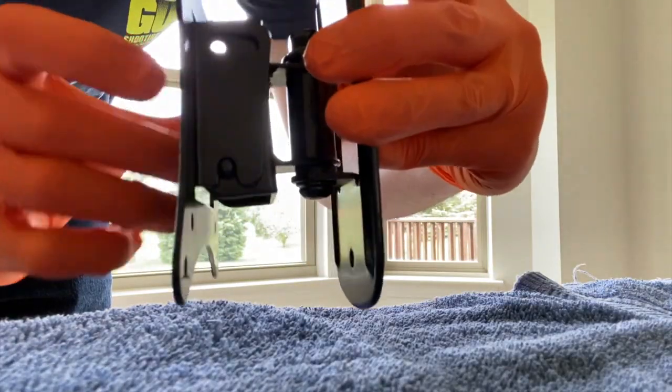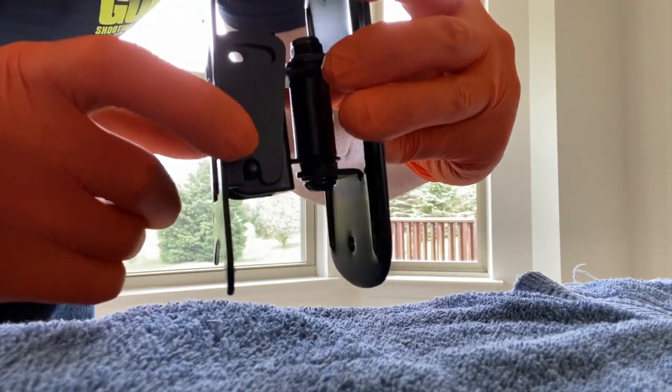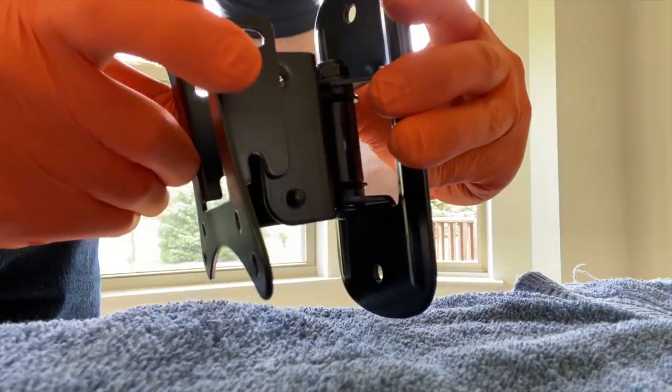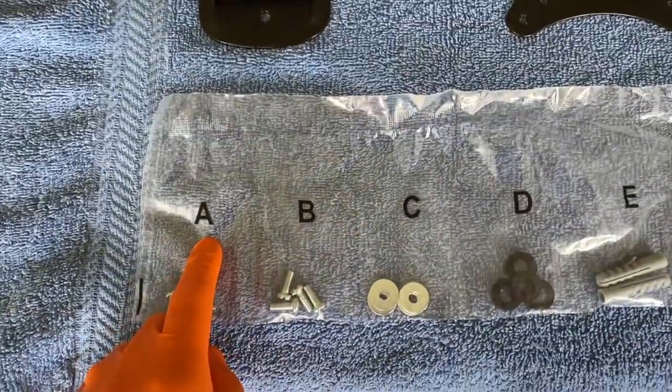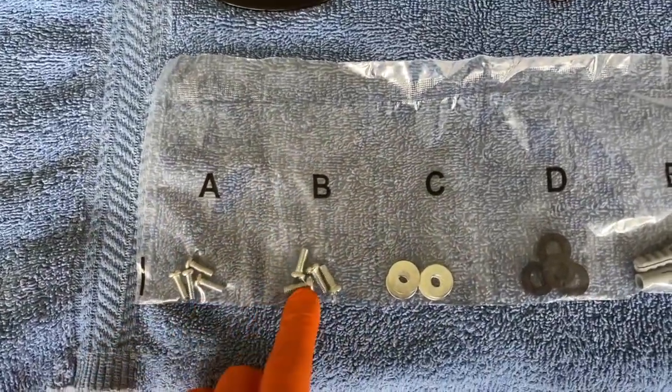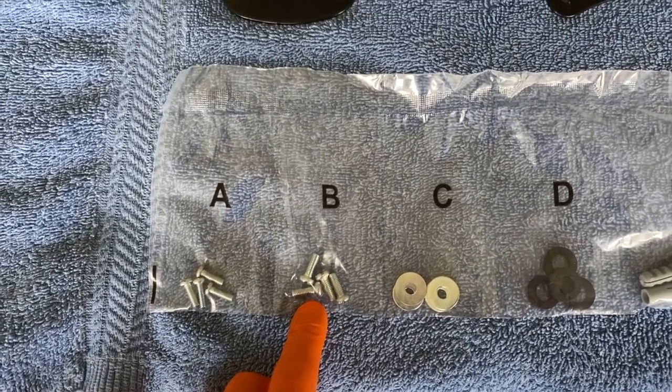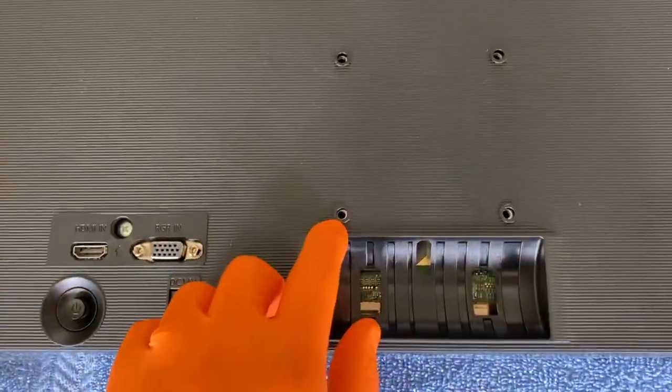With the screws removed the bottom portion rests on a little tab here on each side, just carefully pull those apart. Next grab the hardware packets that came in your box and we're going to direct our attention to A and B. These screws in here, we want to open each of them and see which one fits in our thread inserts best.